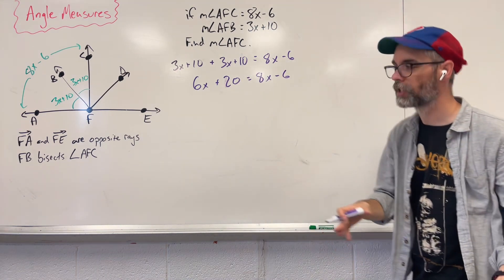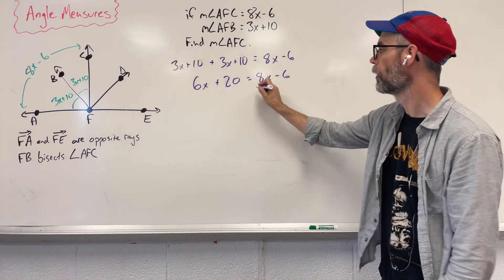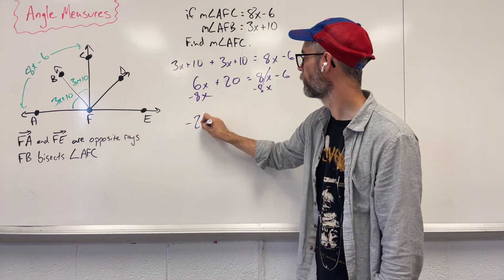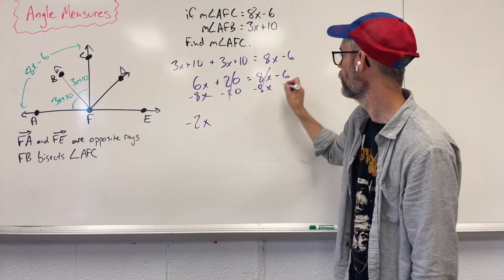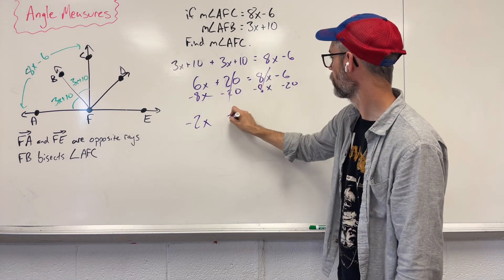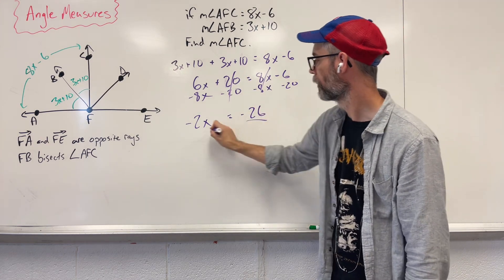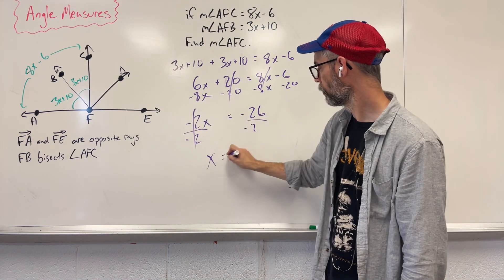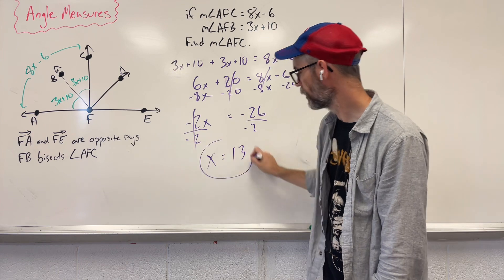Now we need to do a series of inverse operations and get X all by itself. So we say minus 8X, leaving us with negative 2X plus 20 equals negative 6. Minus 20 equals negative 26. Divide by negative 2. X equals 13.